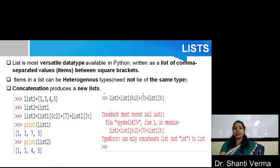In the example, you can see that I declare one list that is list1 having the four data items 1, 3, 4, and 5. Now, if I write list2 equals to list1, then when I print list1 it's 1, 3, 7, 5, and when I print list2 it's 1, 3, 4, 5. So basically, list2 is a duplicate copy of list1.